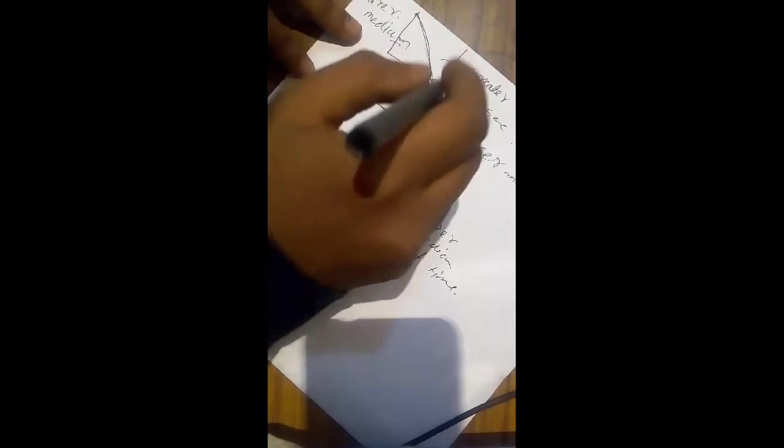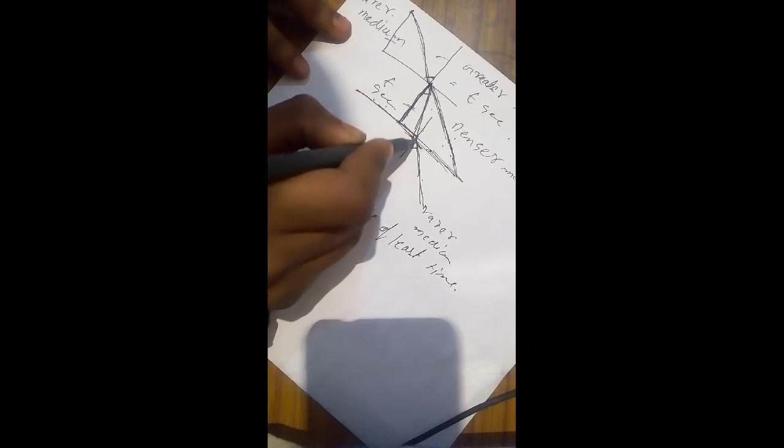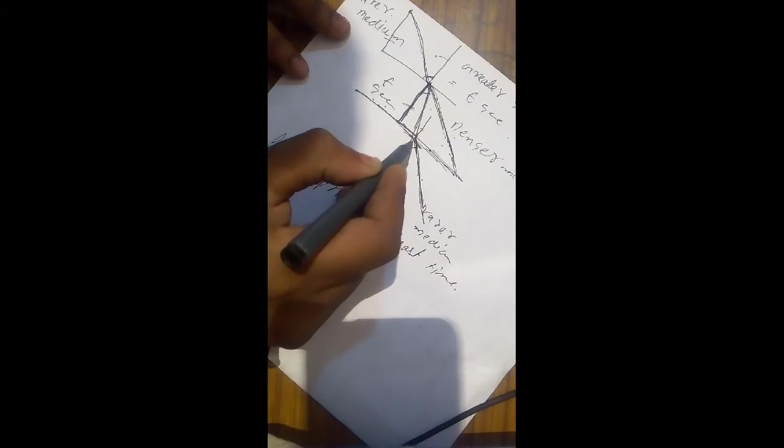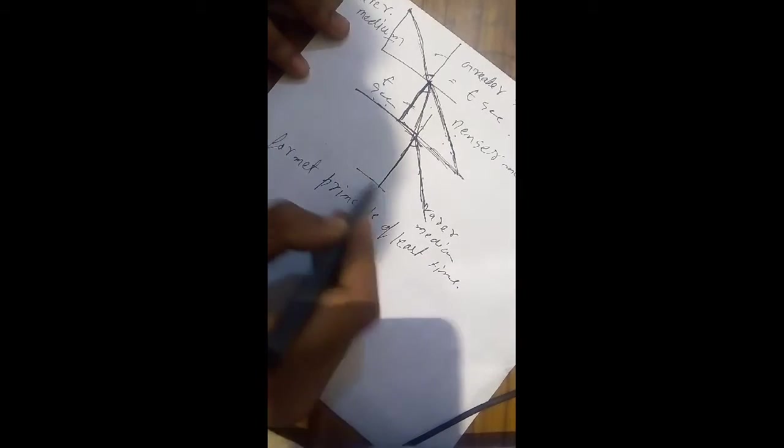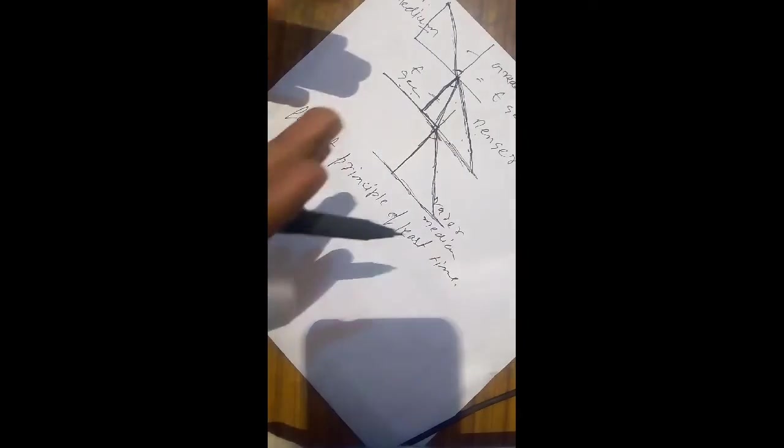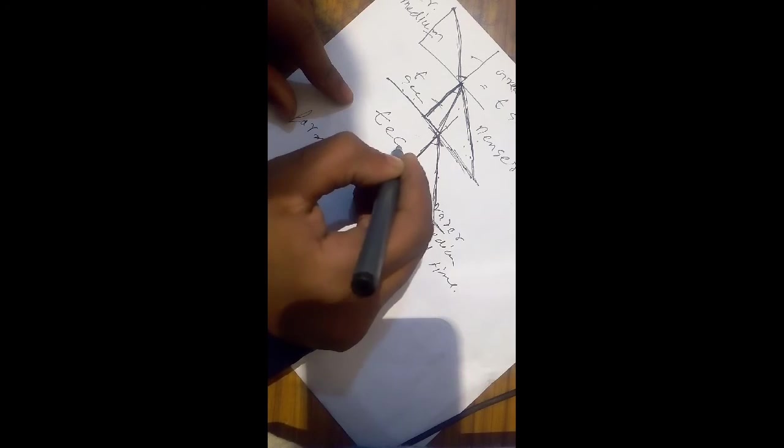It chooses a longer path so it can travel that very distance in the same time t seconds. This is the concept of Fermat's principle.